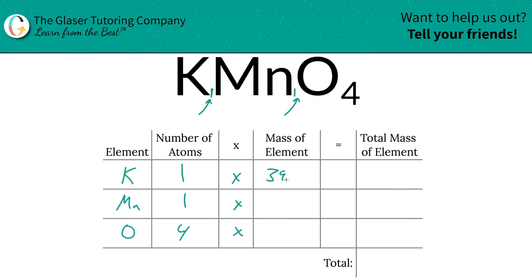So let's write them on. This is going to be 39.10, this was 54.94, and this was 16. Then all we're simply going to do is multiply this row together so that we find the total mass of the element in the compound. So the total mass of potassium is going to be 39.10, total mass of manganese is going to be 54.94.